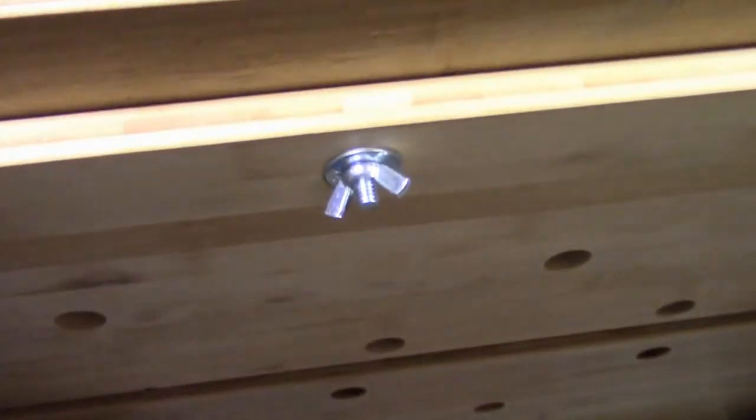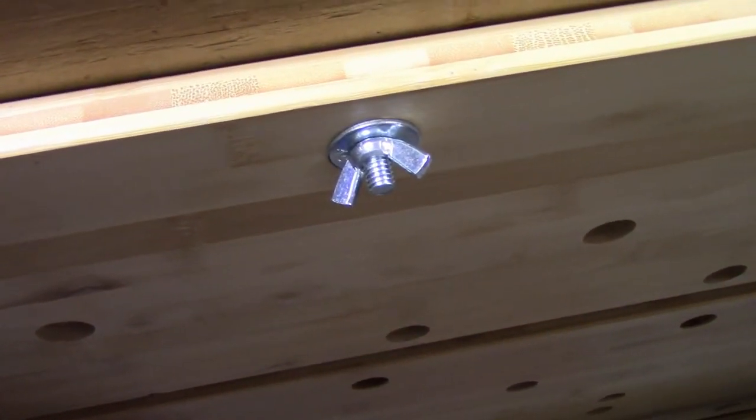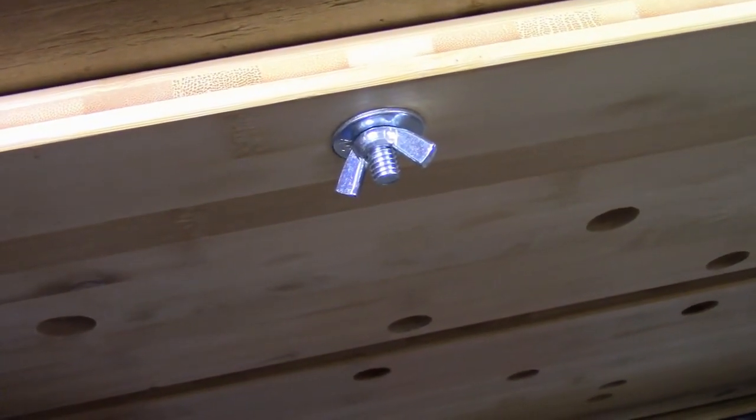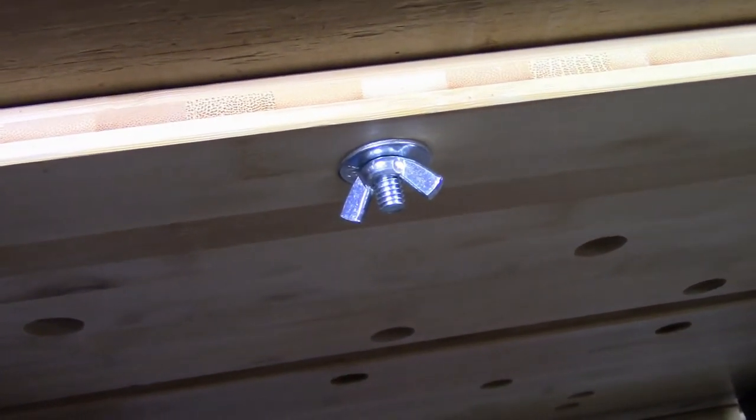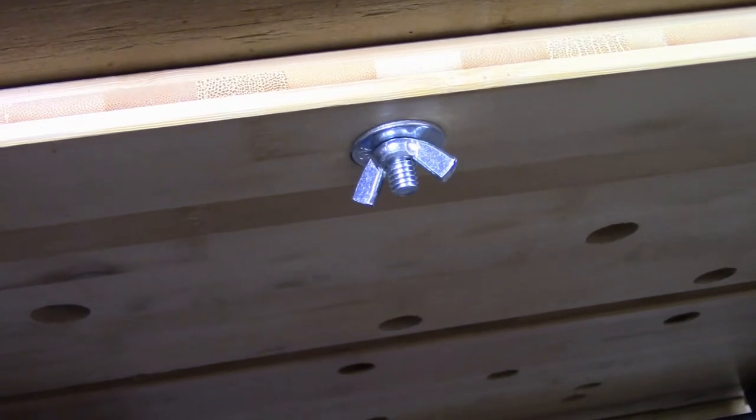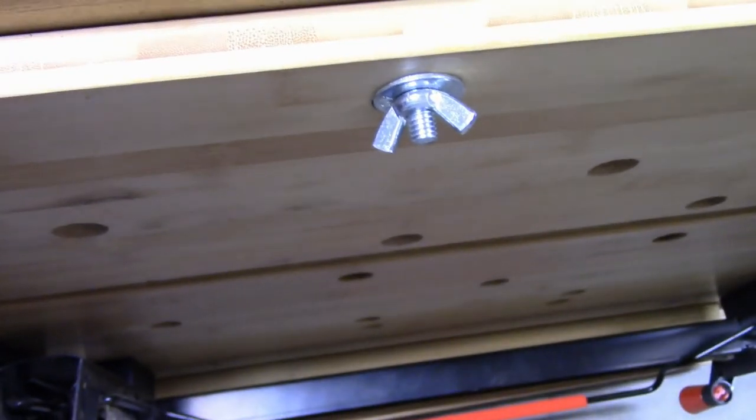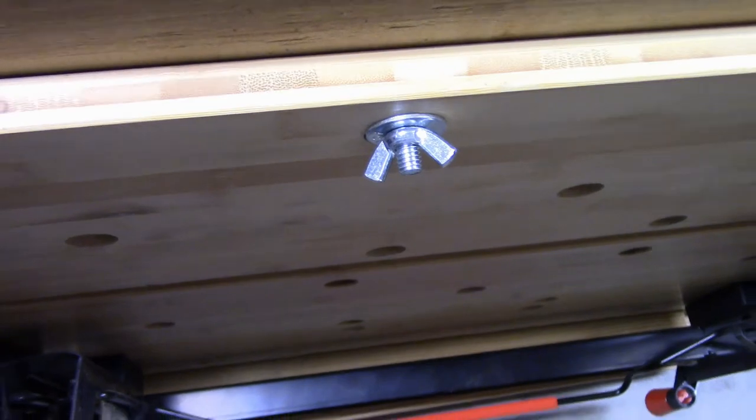Right here you can see the washer will not pass through the dog hole which is only 20 millimeters, while the washer is three quarters and just a little bit bigger. And I've got the excess threading down to the bottom so it's not in the way.